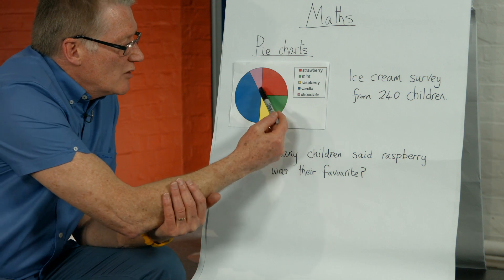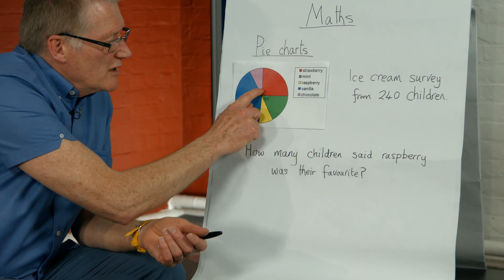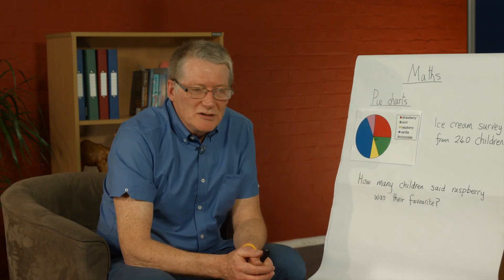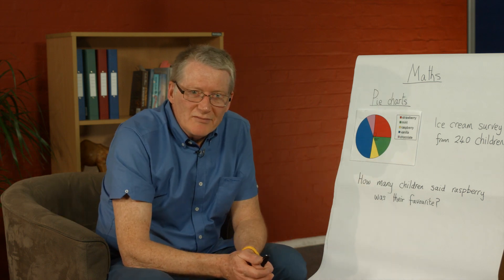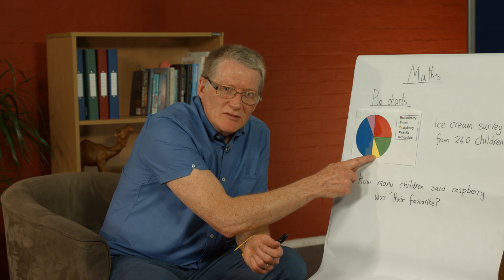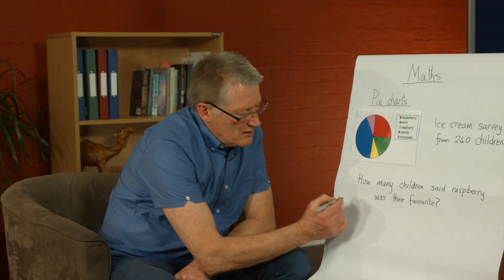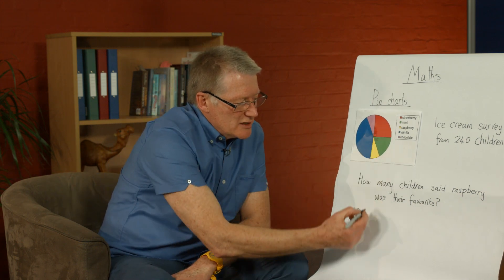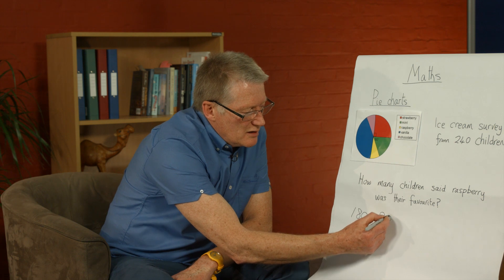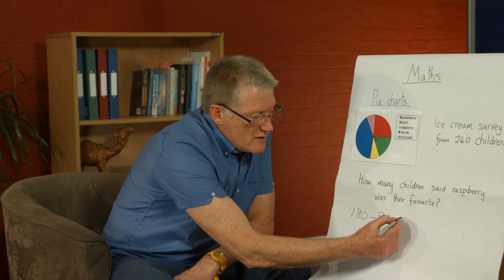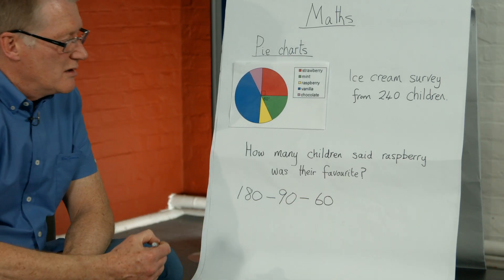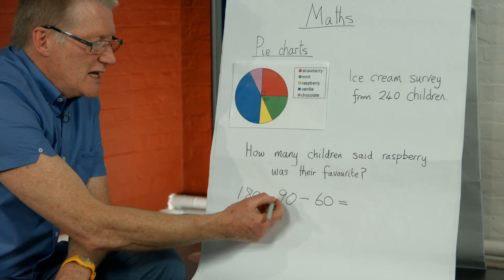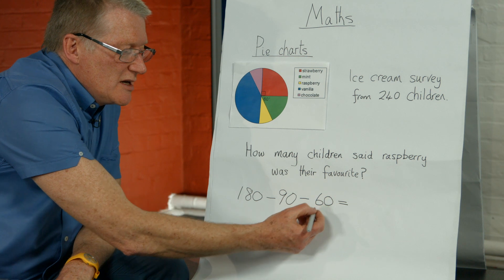We can also see a square in the corner of the red angle, which represents 90 degrees. So we've got 90 degrees for the red section and 60 degrees for the green section. That means we can work out the yellow section — raspberry. The total is 180 degrees, so we take away 90 degrees and 60 degrees, leaving us the angle for the yellow section: 180 − 90 = 90, minus 60 = 30 degrees.